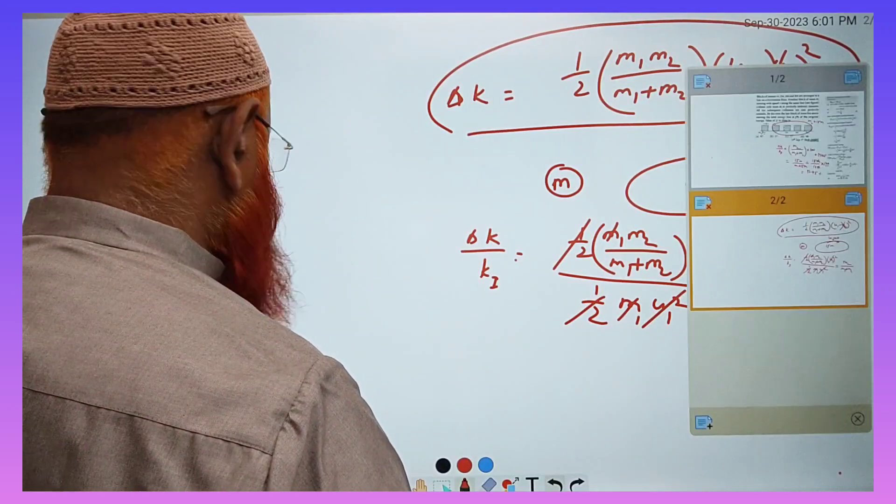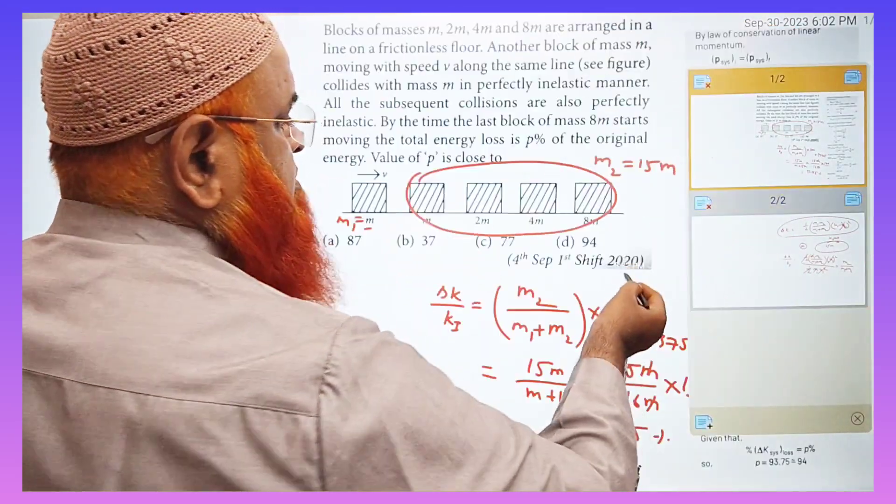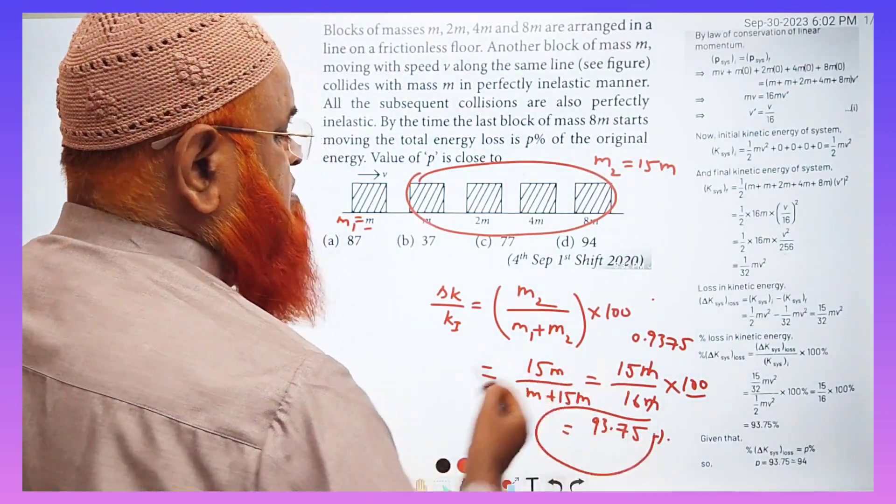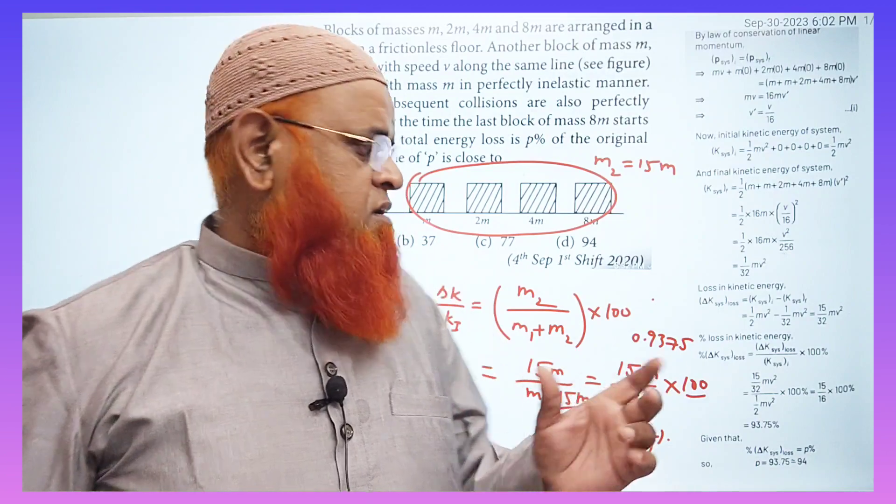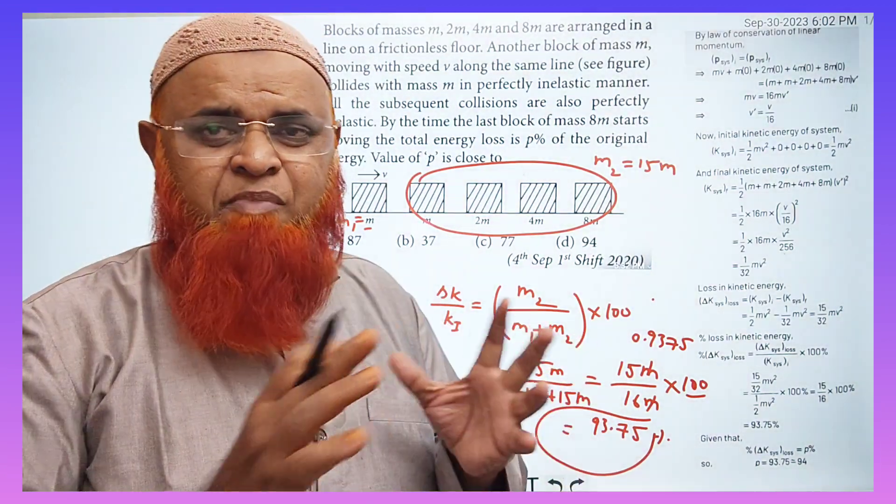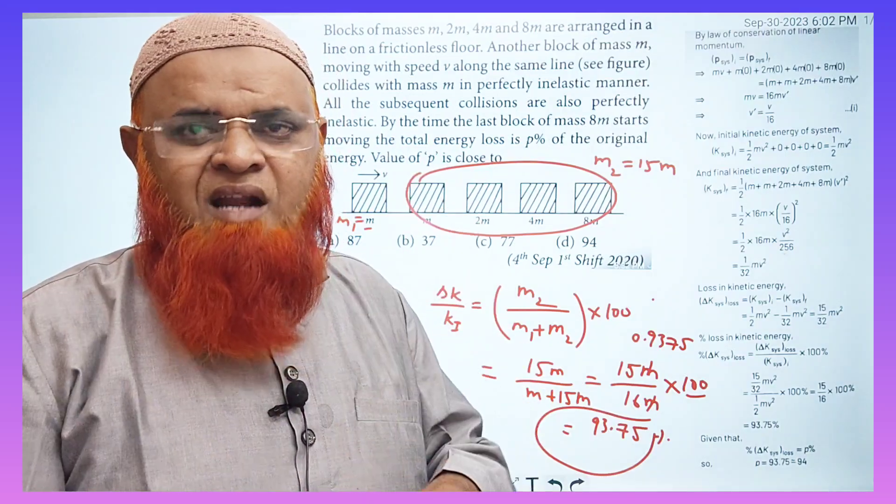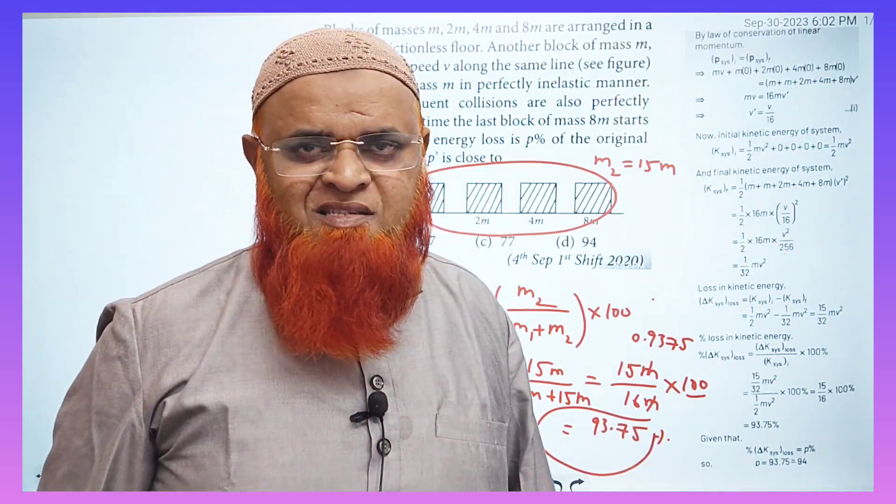So therefore, what I am going to get now? It's very simple. By using this shortcut, I am able to solve the problem and get the problem solution. If you know this formula, without pen and paper also, m₂/(m₁ + m₂), in mind you can calculate and get the answer. So hope you have enjoyed this. Thank you.